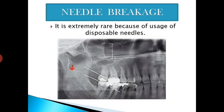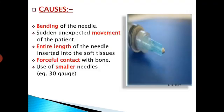Needle breakage is extremely rare because of the use of disposable needles. Although it is rare, it does occur. Causes for needle breakage include bending of the needle, sudden unexpected movement of the patient, entire length of the needle inserted into the soft tissues, forceful contact with bone, and use of smaller needles such as 30 gauge.